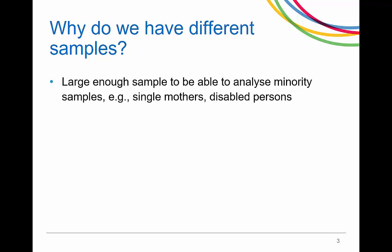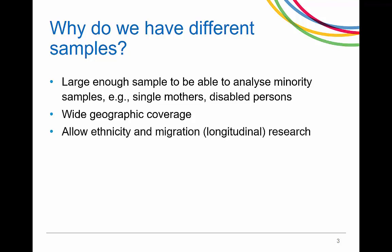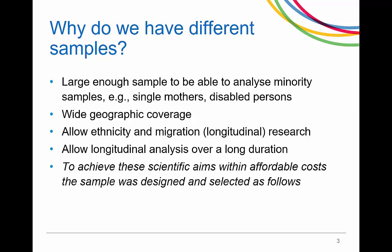First, the sample needed to be large enough to allow analysis of minority samples, for example single mothers and disabled persons. Second, it needed to have a wide geographic coverage to allow researchers to compare regional differences. Third, the sample needed to have sufficiently large numbers of ethnic minority and immigrant sample members to allow longitudinal ethnicity and migration research. Fourth, was to allow longitudinal analysis over a long duration. And to achieve these aims, the sample was designed and selected as follows.